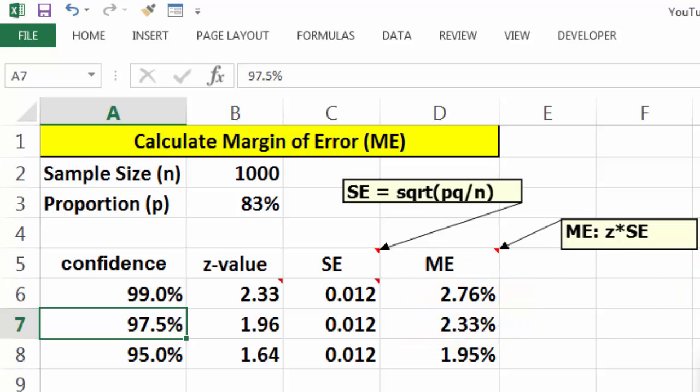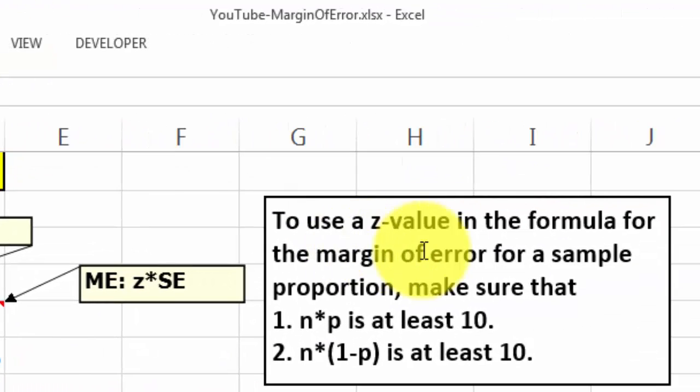So there is a rule: to use a z-value in this formula for the margin of error, make sure that n times p is at least 10, and n times (1 minus p) is at least 10. If that is not the case, then you have to use t-values. But polls are usually for larger samples; otherwise they become very unreliable.